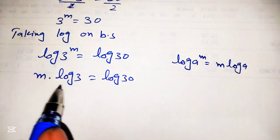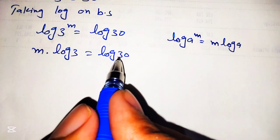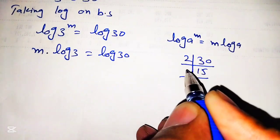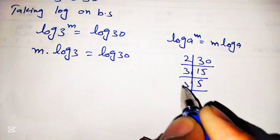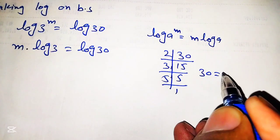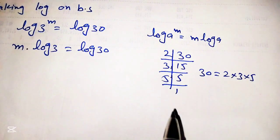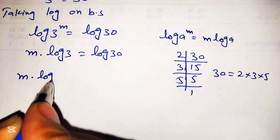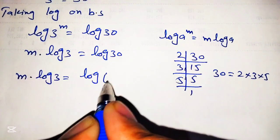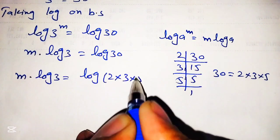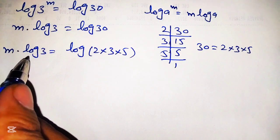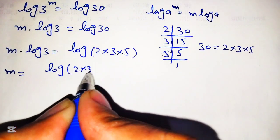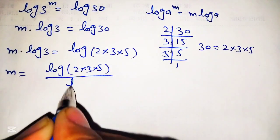We can also factorize 30 as 2 multiplied by 3 multiplied by 5. So the factors of 30 are 2 × 3 × 5. Now we will use these factors and write m into log of 3 is equal to log of 2 into 3 into 5. Dividing both sides by log of 3, we get m is equal to log of 2 into 3 into 5 over log of 3.